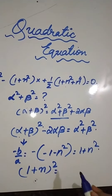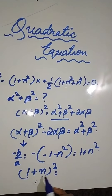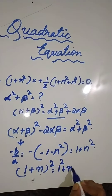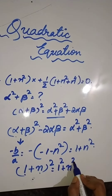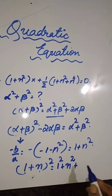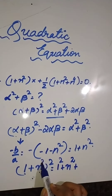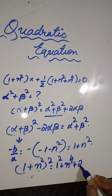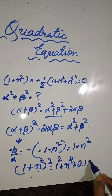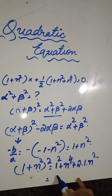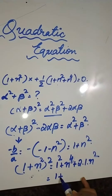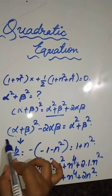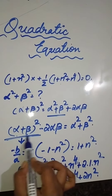When I square this, you will get 1² + n⁴ + 2 × 1 × n², which gives 1 + n⁴ + 2n². So 1 + n⁴ + 2n² is (α + β)².